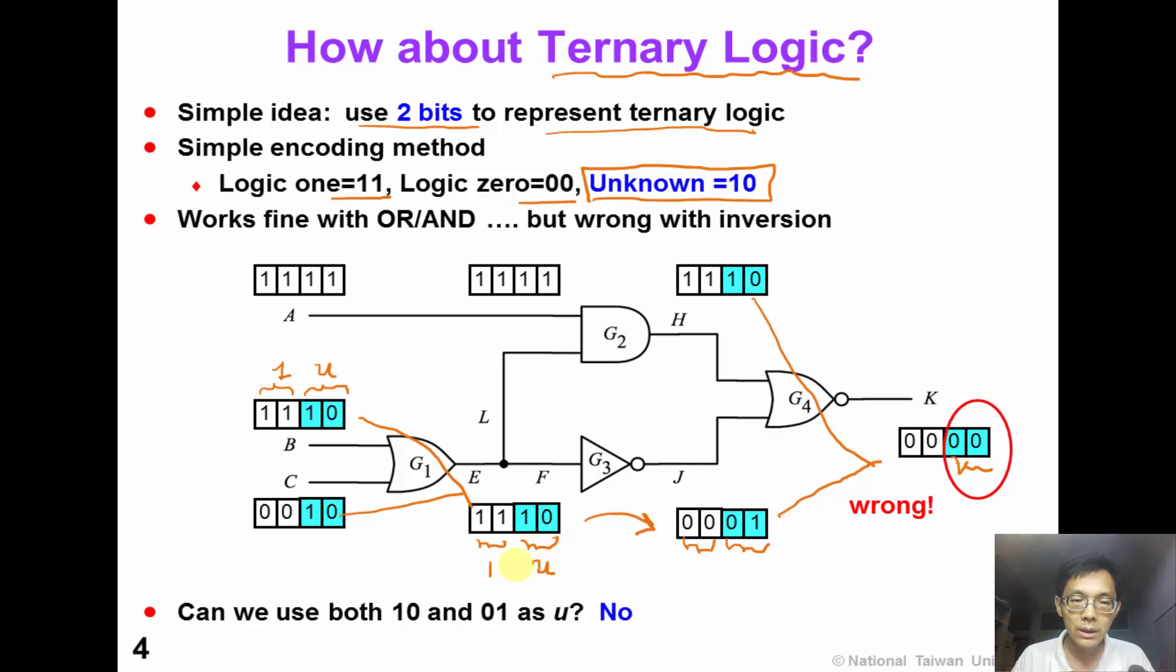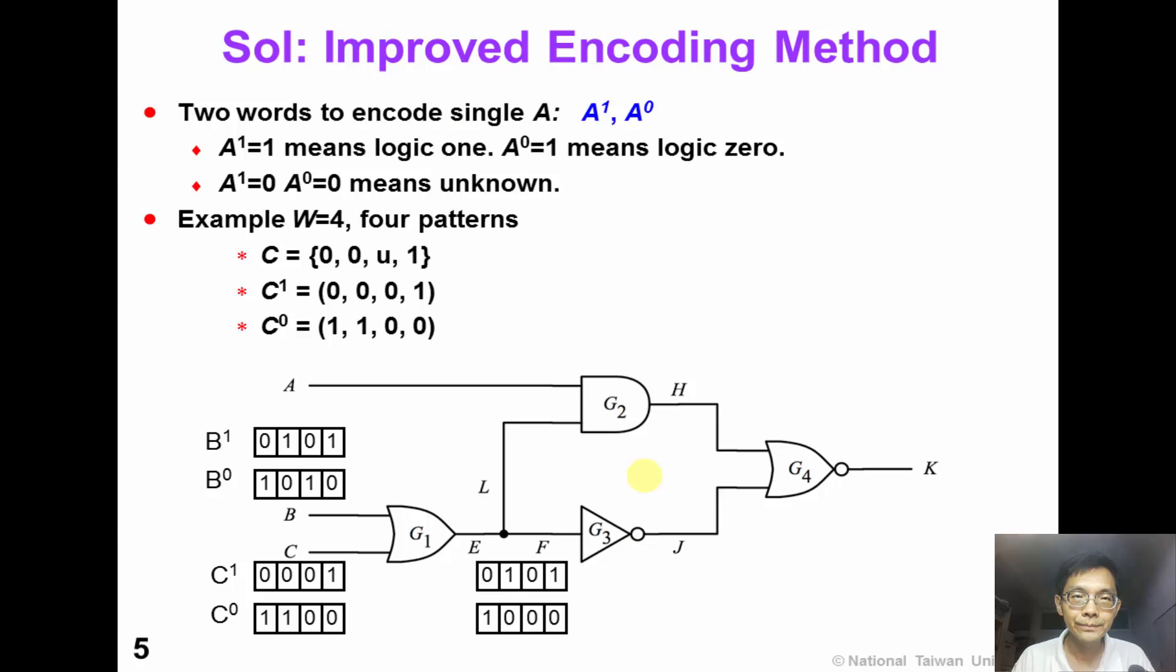From this example, we can see that we cannot use both 0 1 and 1 0 as unknown. It does not work very well. A very simple solution is to improve our encoding method. In this improved encoding method, we use two words to represent one signal. For signal A, we have A1 and A0.